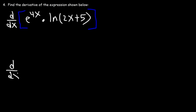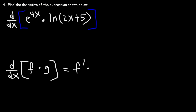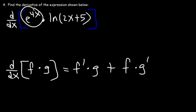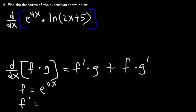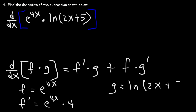The product rule states that the derivative of f times g is f prime times g plus f times g prime. For this problem, f is e to the 4x, so f prime is 4e to the 4x. And g is ln of 2x plus 5, so g prime is 2 over 2x plus 5.